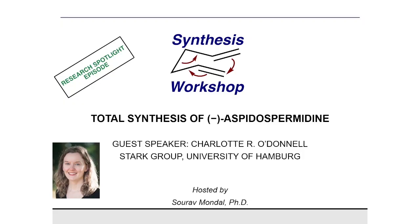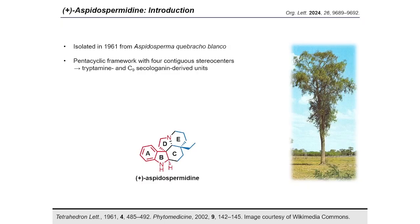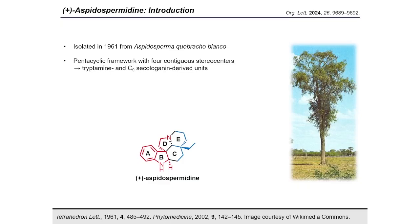Thank you for the kind introduction, and thank you Matthew for the invitation to present this work on the Synthesis Workshop platform. Today I present my doctoral work on the enantioselective total synthesis of aspidospermine. Aspidospermine was first isolated from the bark of the South American tree Aspidosperma quebracho-blanco in 1961. Aspidospermine has a pentacyclic framework with four contiguous stereocenters, and is composed of tryptamine and secoiridoid-derived units, shown here in red and blue respectively.